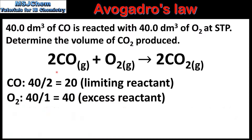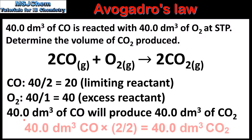If we look at the coefficients in the balanced equation we can see that 2 moles of carbon monoxide will produce 2 moles of carbon dioxide. So 40 cubic decimetres of carbon monoxide will produce the same volume, which is 40 cubic decimetres of carbon dioxide.